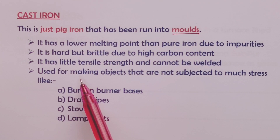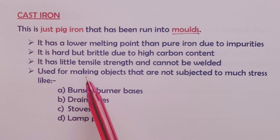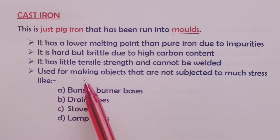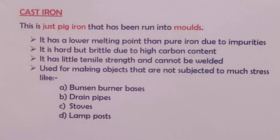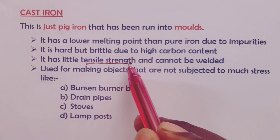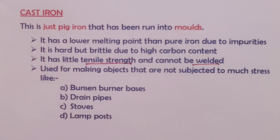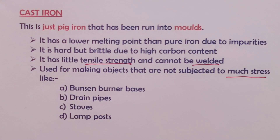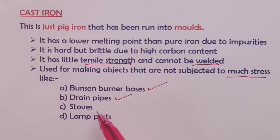Cast iron is hard but brittle, which means it easily breaks, and this is due to the high carbon content — we've just talked about 4% carbon. Cast iron also has very little tensile strength and cannot be welded. It is therefore used to make objects that require less stress, such as Bunsen burner bases, drain pipes, stoves, and lamp posts.